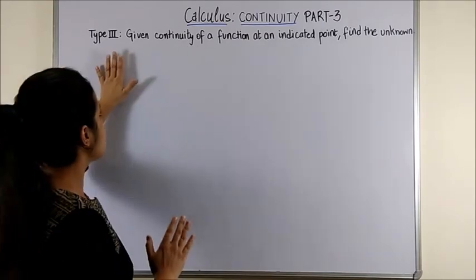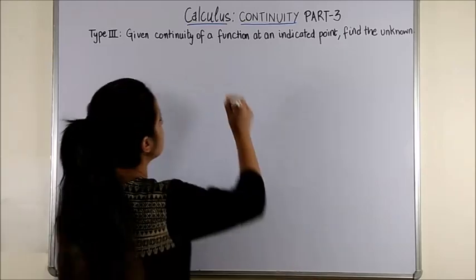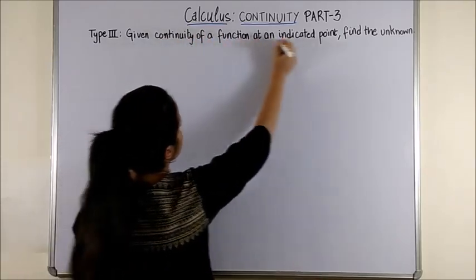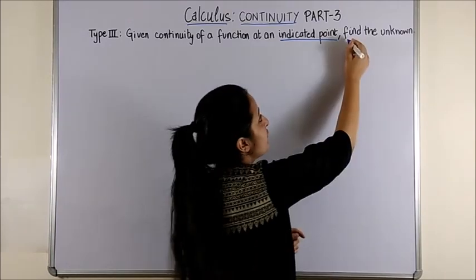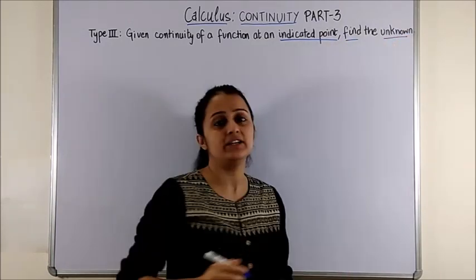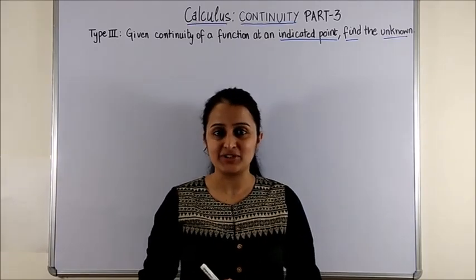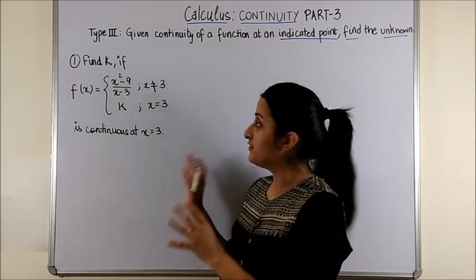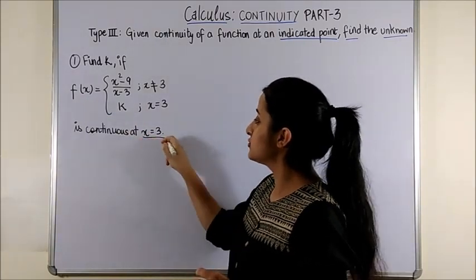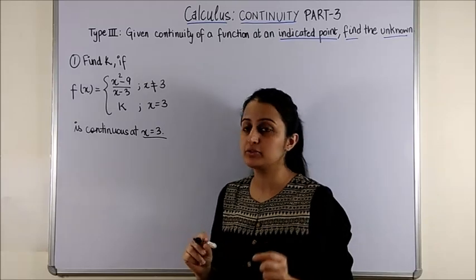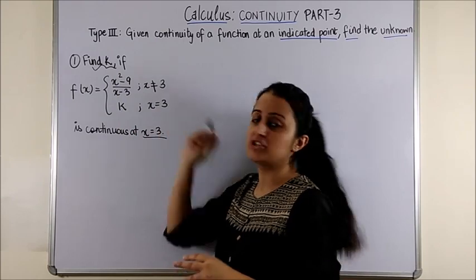In today's video we are discussing type 3. That means if you are already given a function to be continuous at an indicated point, then you have to find the unknown value. Well, let's see straight how we do that in the questions. Have a look at your first question. It says that fx is already given to be continuous at the point x equal to 3 and under this scenario you have to find the unknown which is k.